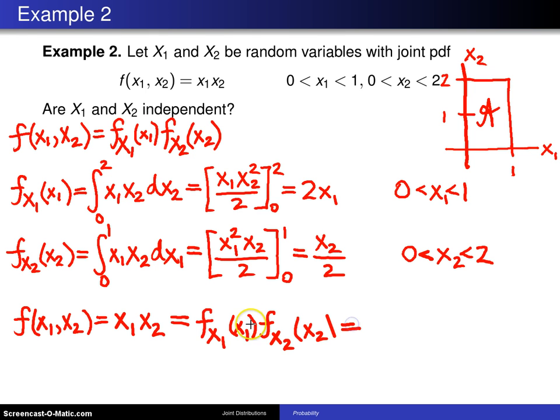The marginal for x1 is 2 times x1. The marginal for x2 is x2 divided by 2. Those 2's cancel, and you just get x1 multiplied by x2.